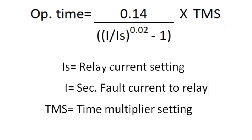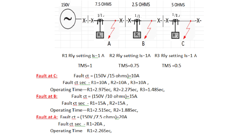TMS is the time multiplier setting. In the CDG relay it goes from 0.1 to 1.0. Suppose TMS equals 0.5 — the operating time you get equals the operating time for TMS = 1, multiplied by 0.5. For example, if setting is 1 ampere, fault current is 10 ampere, and TMS is 0.5, then for TMS = 1 the operating time is 3 seconds; so 3 × 0.5 = 1.5 seconds. This difference in TMS is called grading. Grading depends upon your system, and that setting will be configured in the relay.